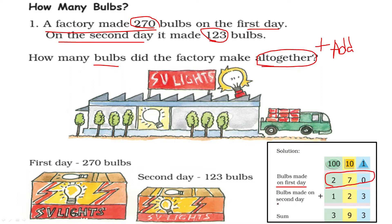The second day it made 123. So add them together to find the total number of bulbs. 3 plus 0 is 3, 7 plus 2 is 9, 2 plus 1 is 3. So altogether the factory made 393 bulbs.